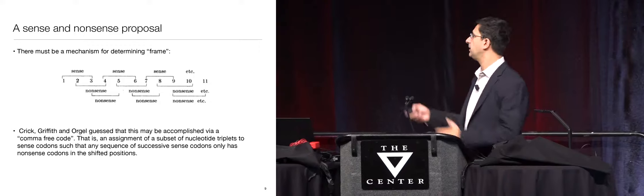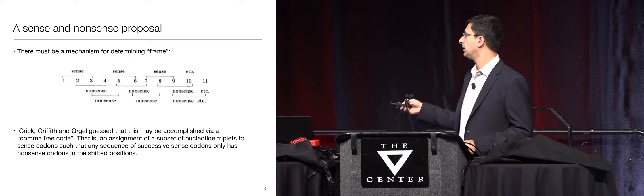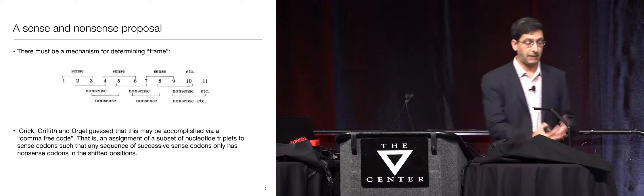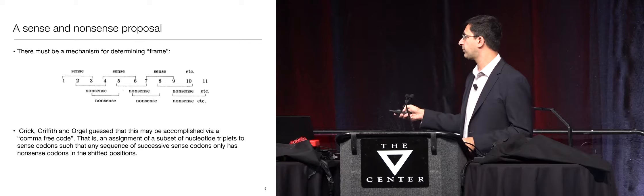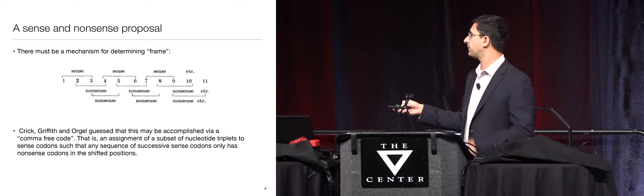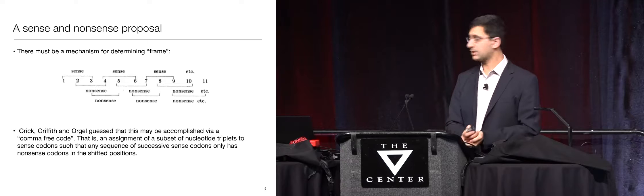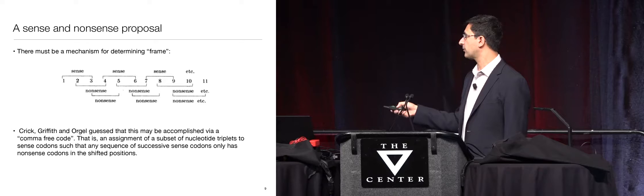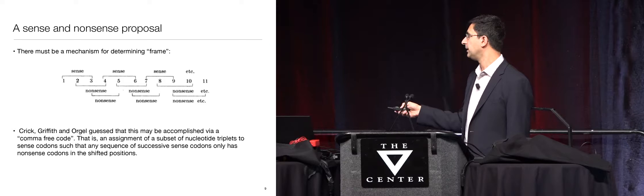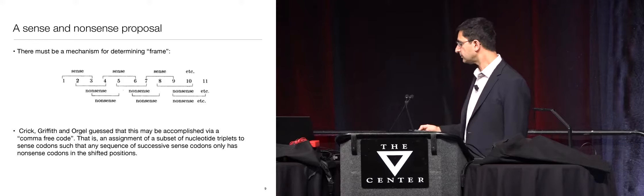They thought: if there is some system by which triplets code for 20 different objects, and this is happening chemically inside a cell, there must be a way to recognize the frame — being able to read this and understand whether it's positions 1,2,3 being coded, or 2,3,4. They called these sense triplets versus nonsense triplets. They wanted codes where code words consist of triplets of A, C, G, and T, but if you glued together any pair of them, the offset triplets would not be in the code — hence a comma-free code.